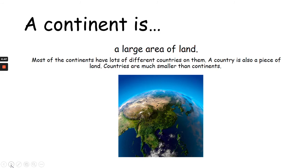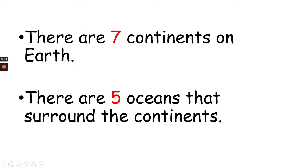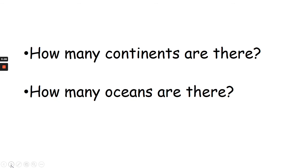A continent is a large area of land. Most of the continents have lots of different countries on them. A country is also a piece of land, but countries are much smaller than continents. An ocean is a large body of water — it's a little bit like a sea, but it's much bigger than a sea. There are seven continents on Earth. There are five oceans that surround the continents. How many continents are there? Seven. How many oceans are there? Five.